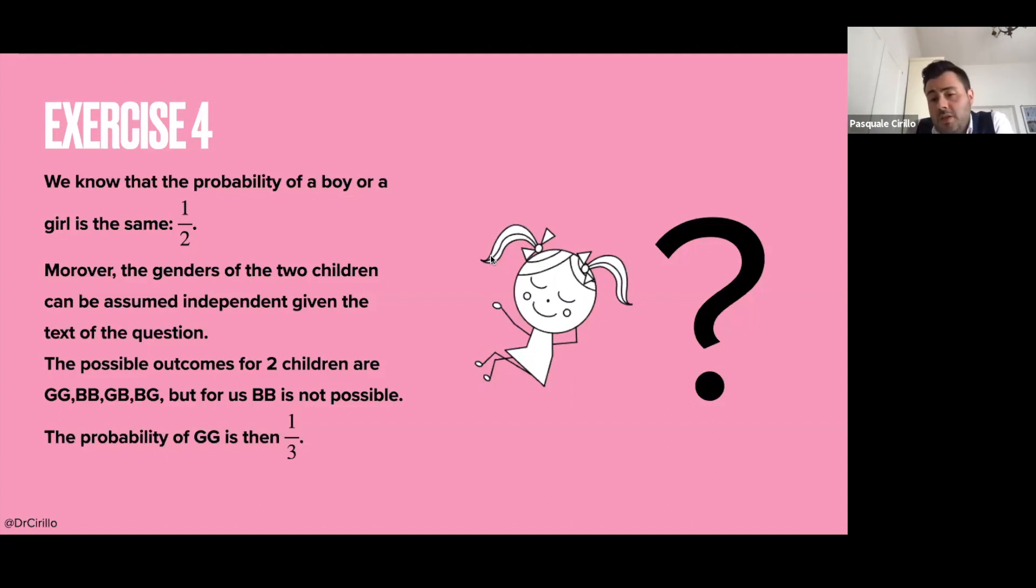So what happens, the probability of having two girls, given that I told you that I have a girl already is one over three, because I have just three possibilities that are double G, BG, and GB. And one of these possibilities is the only one I'm interested in, which is double G. So one over three. So the probability in that case is one third, the probability that I will have a couple of daughters. So two girls as children is one third, because the information I give you about the fact that one of the kids is a girl immediately rules out the possibility of having two boys.